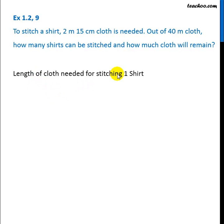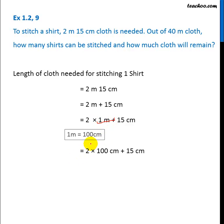Length of cloth for stitching one shirt is 2m 15cm. This is equal to 2m plus 15cm. We write 2m as 2 into 1m. Now 1m is 100cm, so we replace this one meter by 100. 2 into 100cm plus 15, that is 200 plus 15cm, 215cm. So here we have converted this into centimeter.